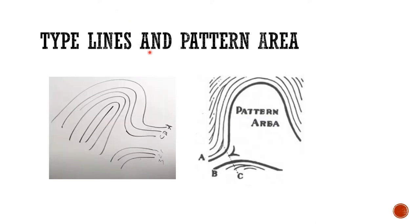Here we have the type lines and the pattern area, shown in figure A and figure B. In figure B, ridges A and B serve as the type lines — they enclose the pattern area. In figure A, ridge C and ridge 1 are the type lines. The type lines are the two innermost ridges that enclose the pattern area.